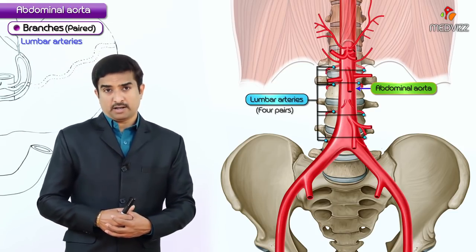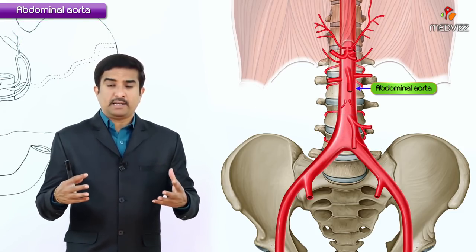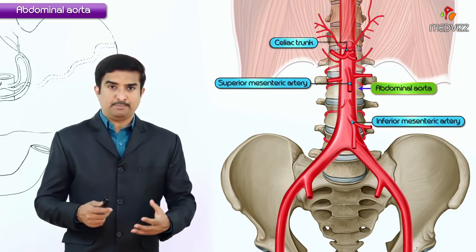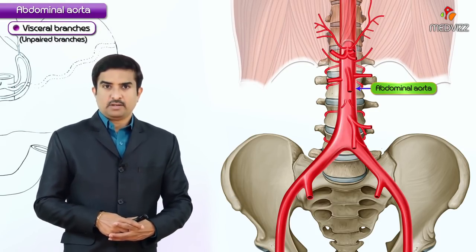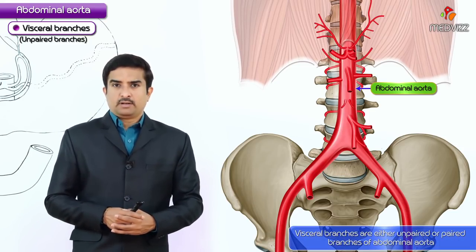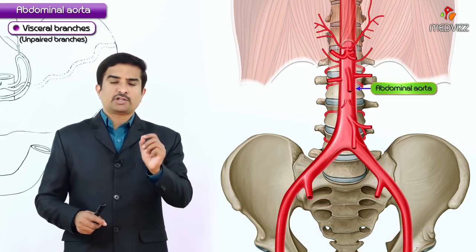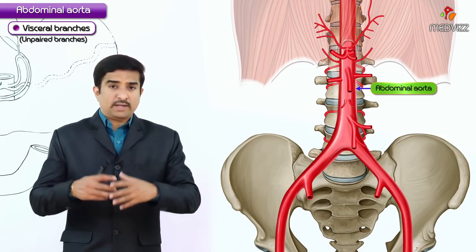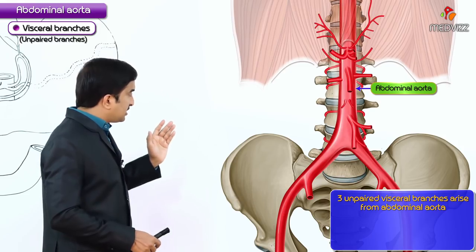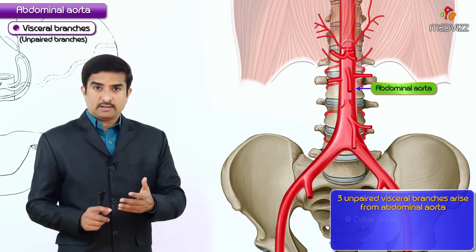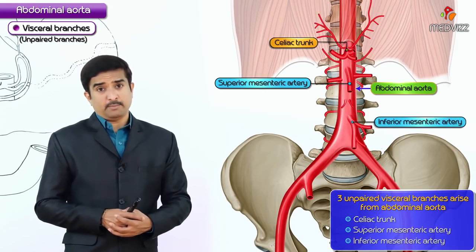Other paired arteries are the lumbar arteries. Even though we have anatomically paired and unpaired branches of the abdominal aorta, for this discussion we will classify them as visceral branches and other branches. There are totally three unpaired visceral branches arising from the anterior surface of the abdominal aorta: the celiac trunk, superior mesenteric artery, and inferior mesenteric artery.